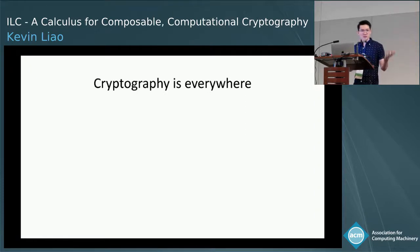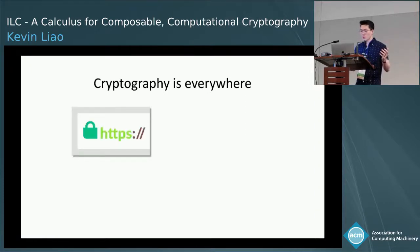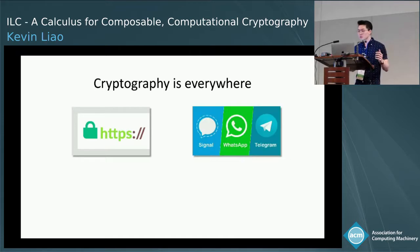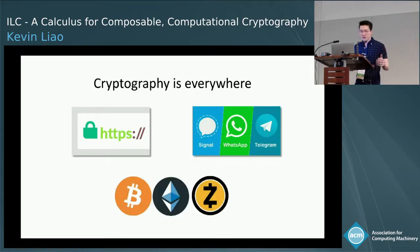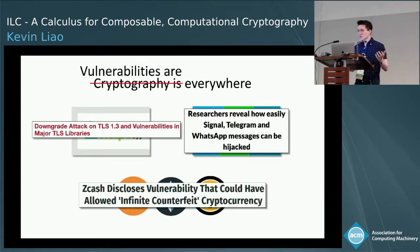Cryptography is important as ever. We use cryptography when we buy things from Amazon, when we message our friends and family, and now we even use it to speculate with our life savings. And so for things that are so widely used and really ought to be secure, sadly they aren't.